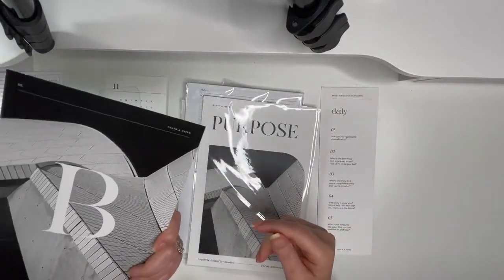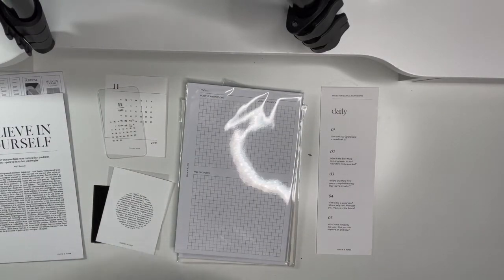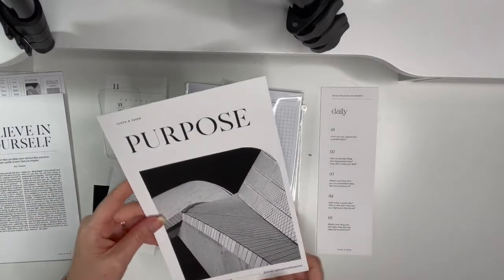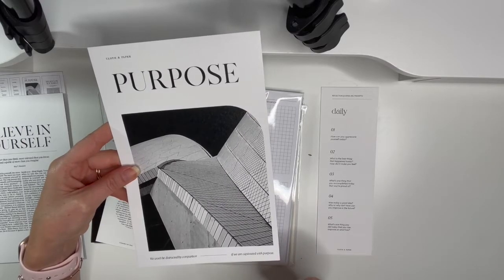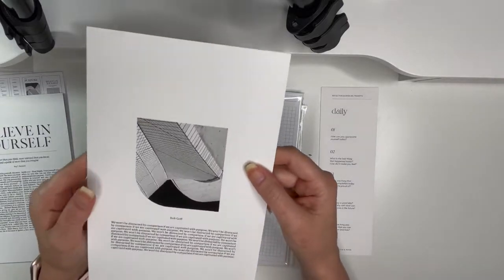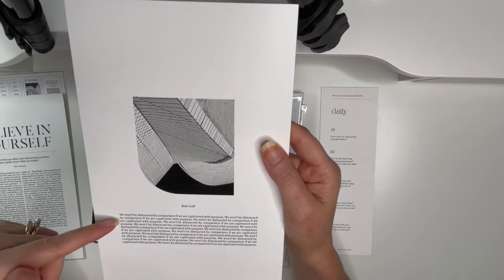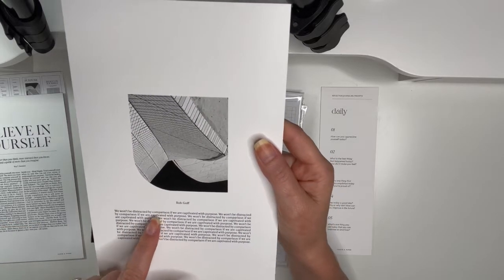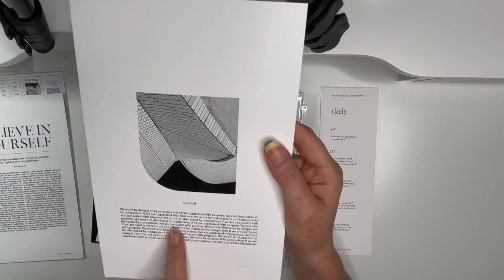That's really nice. Okay, this one here is called Purpose. I'm thinking this theme. We won't be distracted by comparison if we are captivated with purpose. Well that's pretty true, isn't it? Bob Goth. And this is a sentence that's repeated. We won't be distracted by comparison if we are captivated with purpose and it just repeats it over and over.